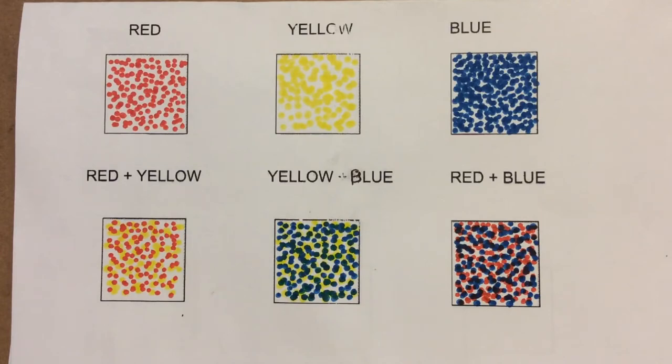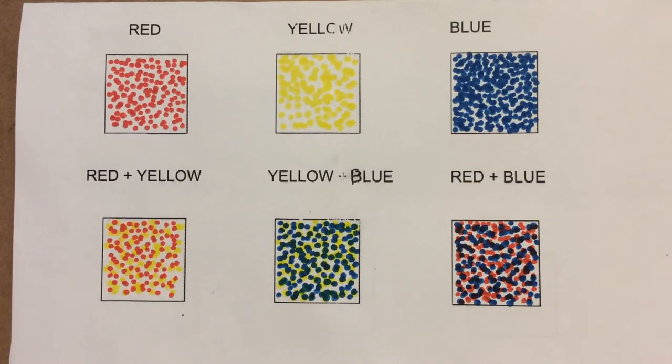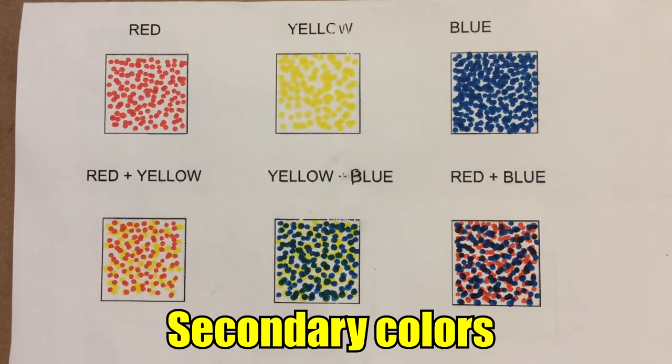But the new colors you have by mixing them, orange, green, and purple, are called secondary colors because they are made by the blending of primary colors.